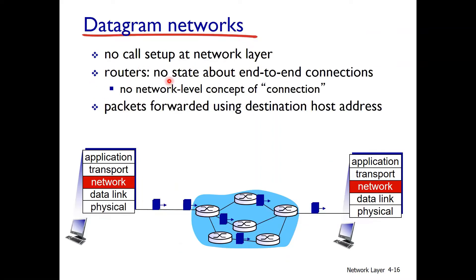Now for the datagram network: this is a connectionless service. There is no call setup at the network layer. Routers maintain no state about end-to-end connections, and there is no network-level concept of connection. Packets are forwarded using the destination host address, that is, the IP address.